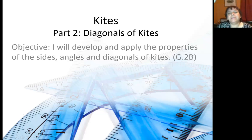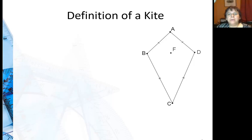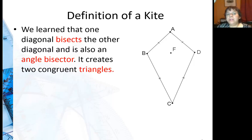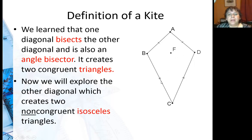Now we're going to look at some interesting properties of the diagonals of kites. We learned that one diagonal bisects the other diagonal. This diagonal bisects, and it is also an angle bisector. You actually may not notice that it bisects the diagonal, but I'm going to show it to you in just a second. It does create two congruent triangles. Now we're going to explore what this diagonal does, the one that connects the two congruent angles.